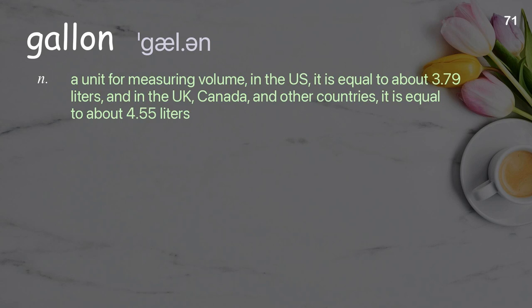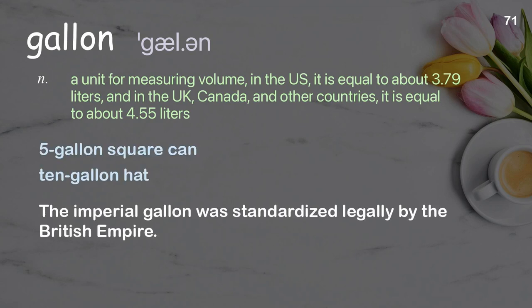Gallon: A unit for measuring volume. In the U.S., it is equal to about 3.79 liters, and in the U.K., Canada, and other countries, it is equal to about 4.55 liters. Examples: five-gallon square can, ten-gallon hat. The imperial gallon was standardized legally by the British Empire.